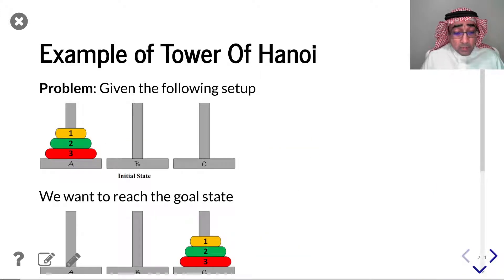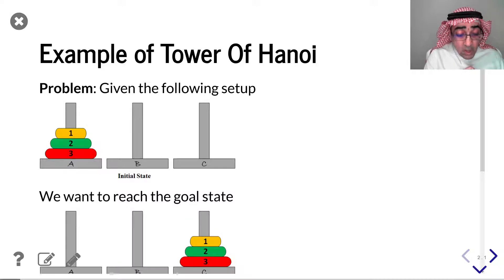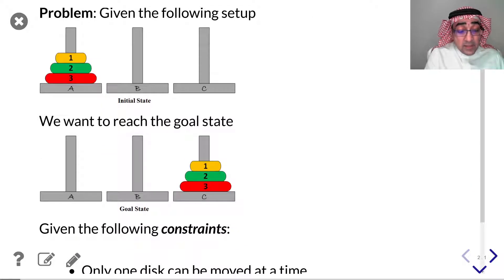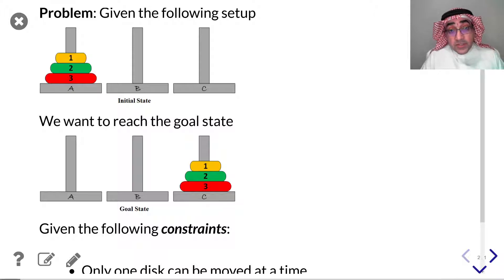What is the problem of Hanoi? The problem of Hanoi states that you have three pins and three disks. You start with pin A, pin B, and pin C, where pin C and pin B are empty and all the disks are in pin A ordered in a specific order. What you want to do is take the disks from pin A to pin C and have them stacked in the right order as shown in the example, and you have some constraints.